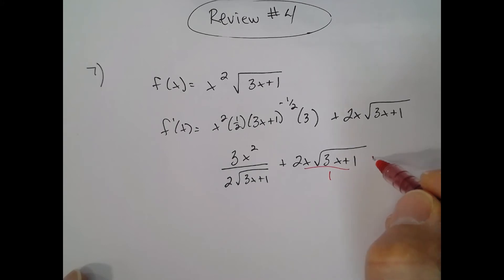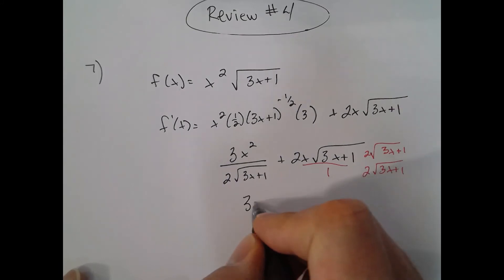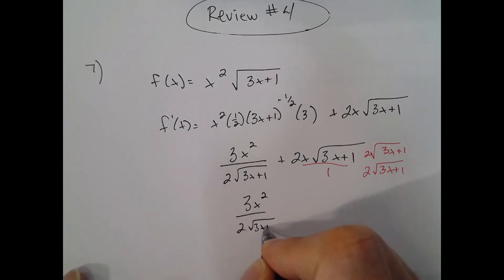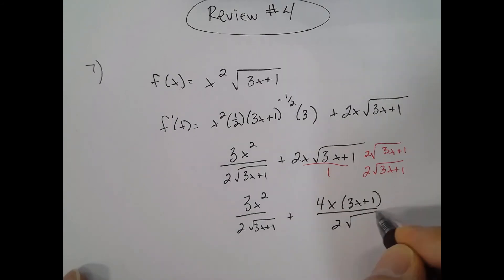So I have three x squared over two square root of three x plus one, plus four x times three x plus one over two square root of three x plus one.